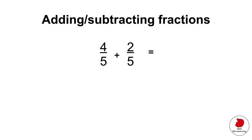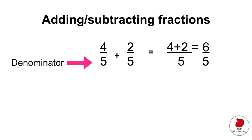Sometimes on your test they'll ask you to add or subtract fractions that look like this. If we look at the denominators, you can see that they both fulfill the rule — they have the same denominator. This is going to be really straightforward. All you have to do is add the numerators together: 4 plus 2 equals 6, and the denominator, because it's common, remains the same — so it stays at 5.